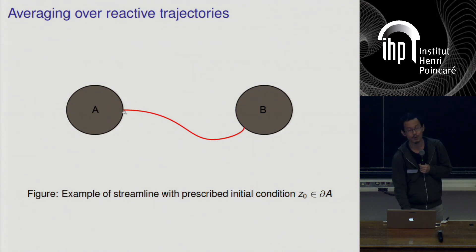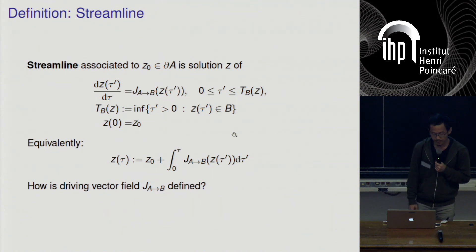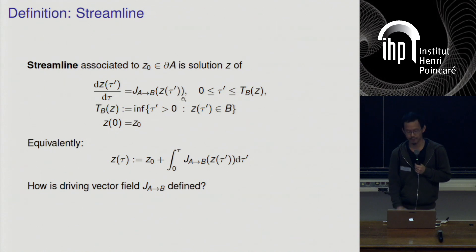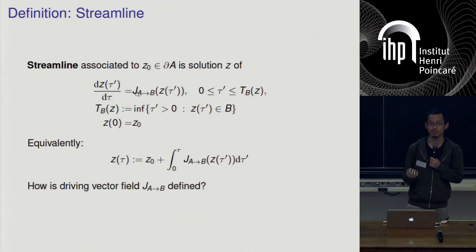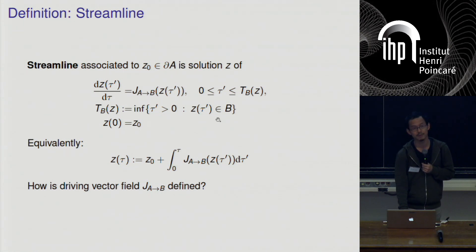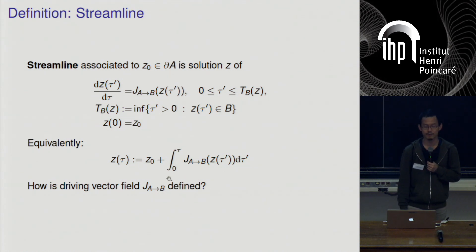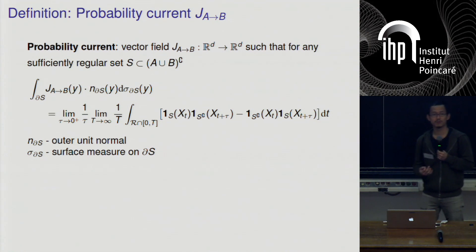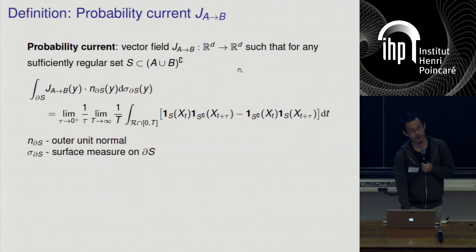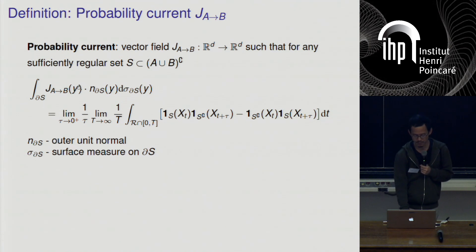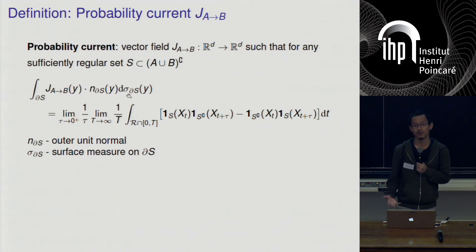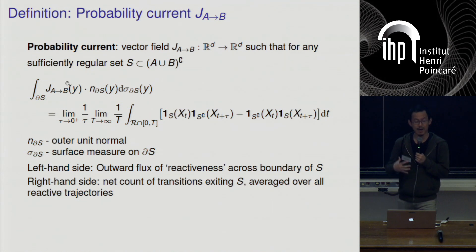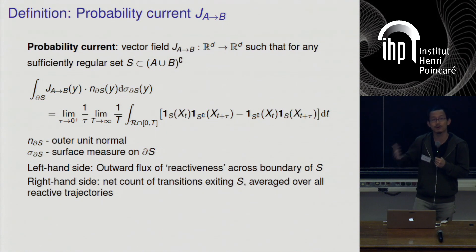The definition of the streamline can be done in two ways. We can either formulate it as the solution to an initial value problem with a driving vector field given by J_A→B, with a prescribed initial condition, and evolve it until it hits B. Equivalently, we can rewrite this as an integral form — we just initialize and follow the vector field. How do we define this driving vector field J_A→B? This is one of the cornerstones of transition path theory. We define the probability current to be a vector field from R^d to R^d, such that for any sufficiently regular set S not in the union of A or B, we have the following equation: N_{∂S} is the outer unit normal to this set S, and σ_{∂S} is just the surface measure on the boundary of S.